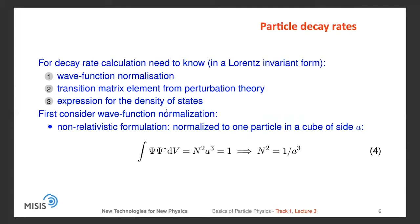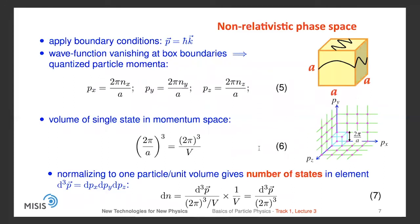Let's first consider the wave function normalization. In the non-relativistic formulation, the wave function is normalized to have one particle in a cube of side A. So ψψ* integrated over an elementary volume equals n²A³ and should equal unity, corresponding to one particle, from which we derive n². We also apply boundary conditions that the wave function vanishes at the box boundaries, giving quantized particle momentum — each component px, py, pz expressed through A. The volume of a single state in momentum space follows from this, and when normalizing to one particle per unit volume, the number of states in element d³p is dn = d³p / (2π)³. Therefore the density of states in the golden rule can be written down accordingly.